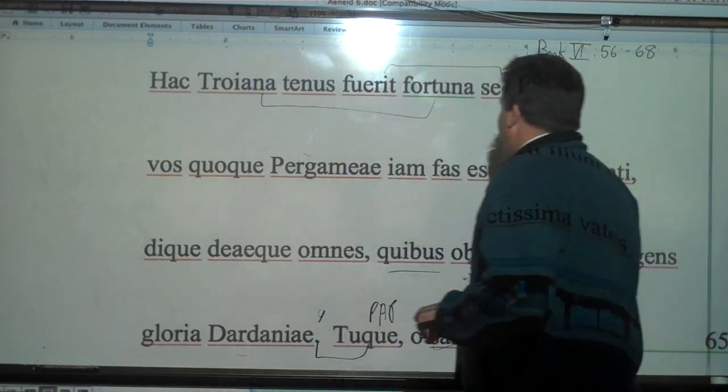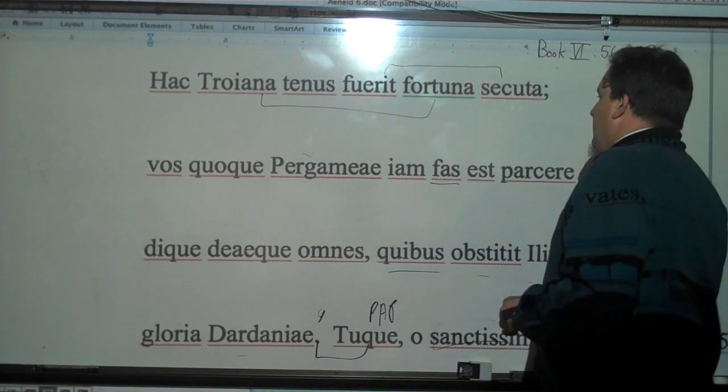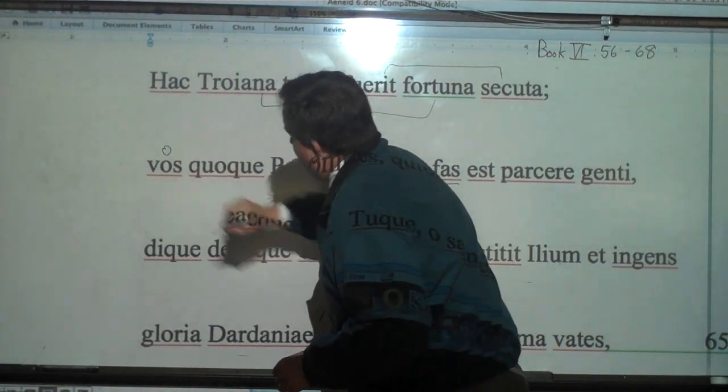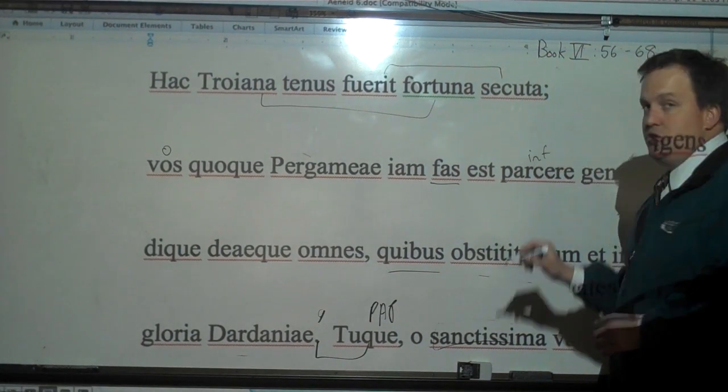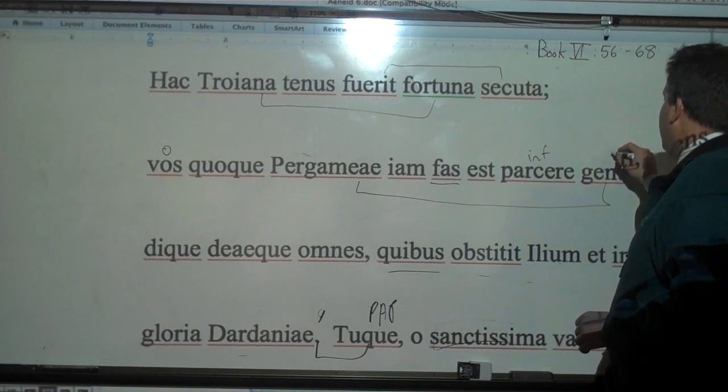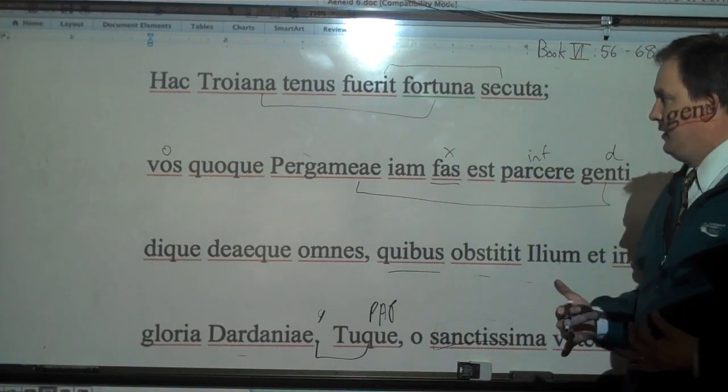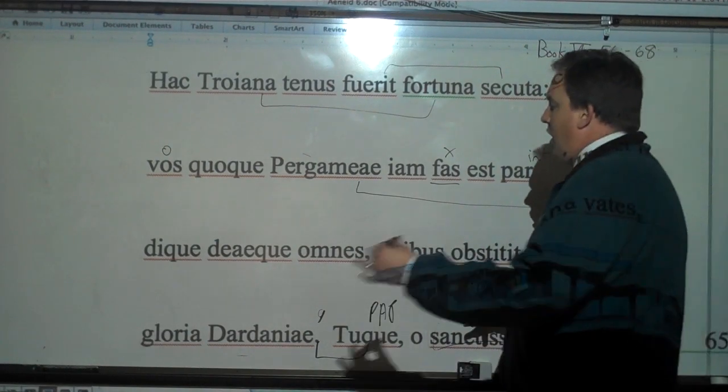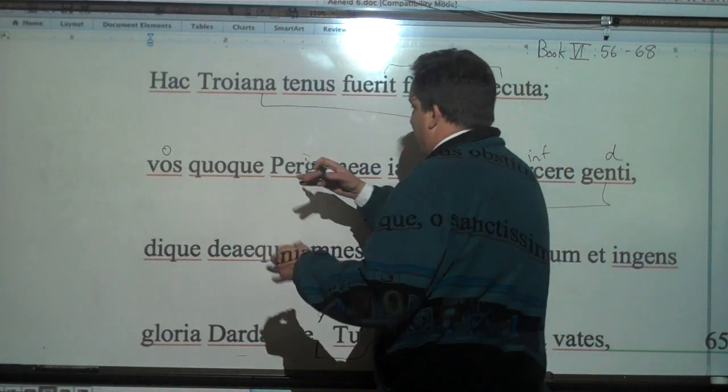Vos quoque Pergameae iam fas est parcere genti. It says, now it is right, fas est, it is right for you also, you also, to parcere, to spare the Pergamean people, the Trojan people. This is your subject here. Fas does not decline. It's like nihil. It is right now for you to spare the Trojan people. Dique deaeque, both gods, all the gods and goddesses.